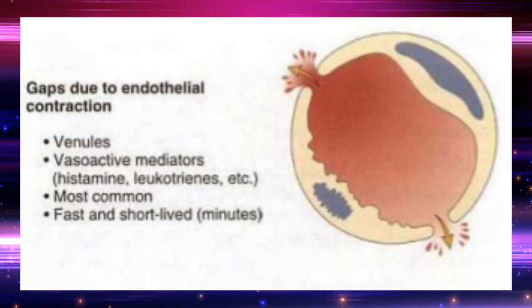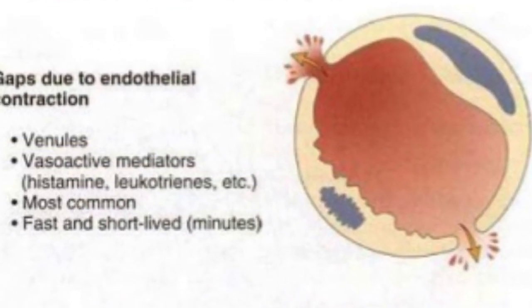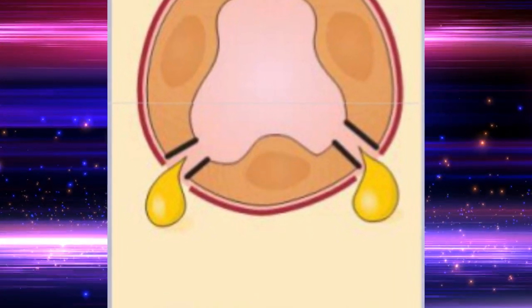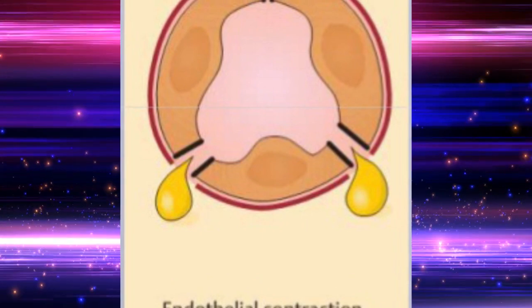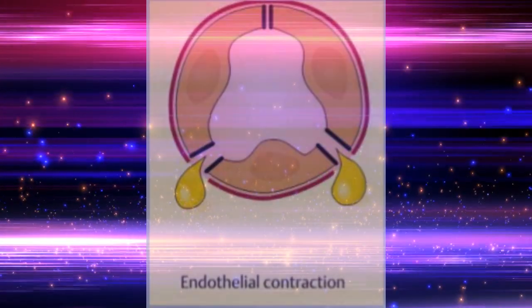Leading to intercellular gaps in post-capillary venules is the most common cause of increased vascular permeability. Endothelial cell contraction occurs rapidly after binding of histamine, bradykinin, leukotrienes, and many other mediators to specific receptors.